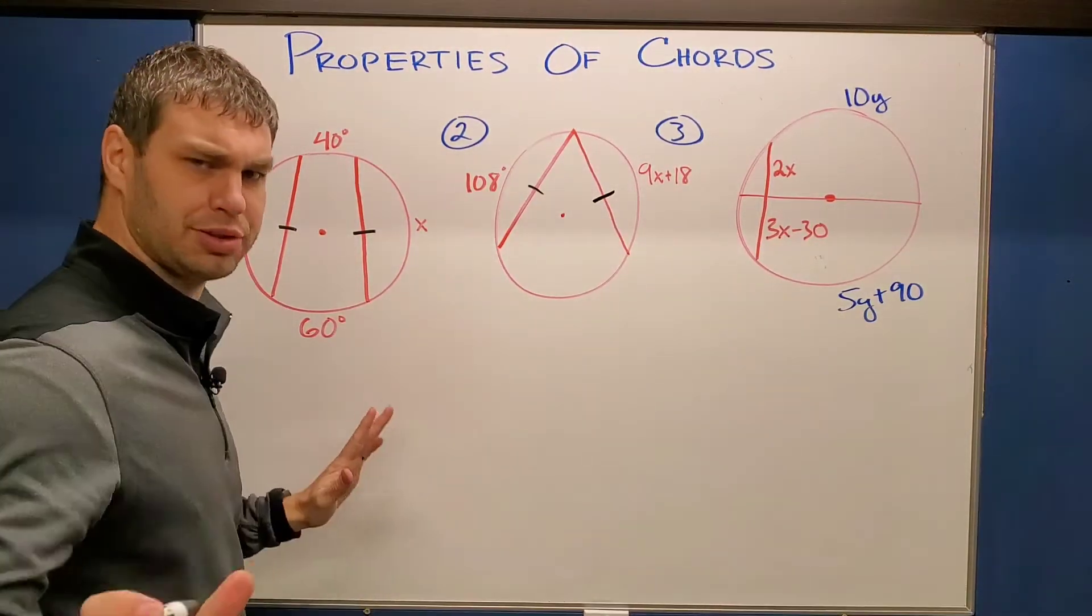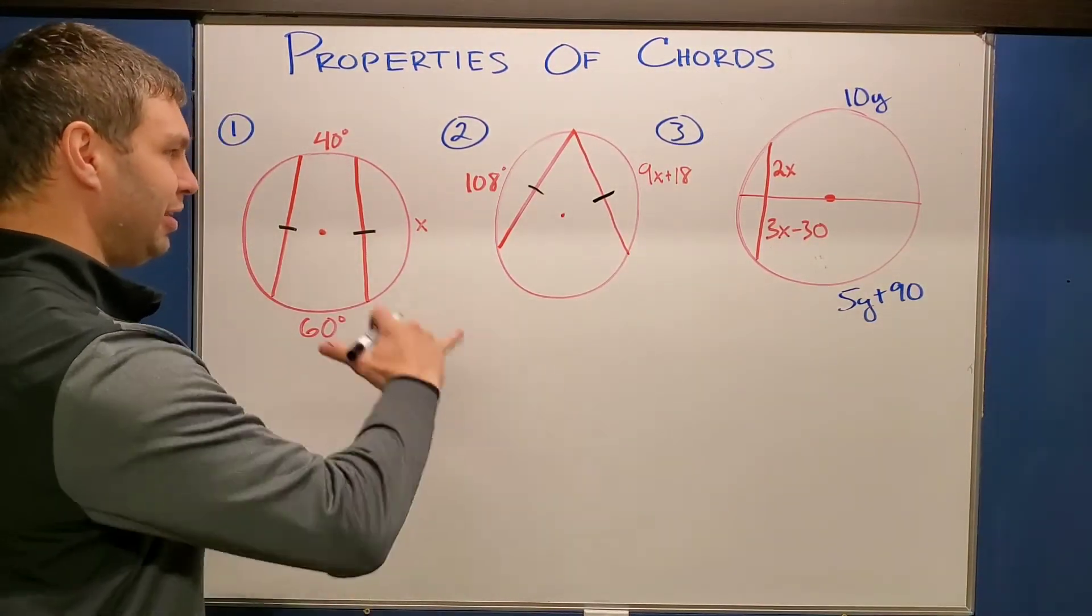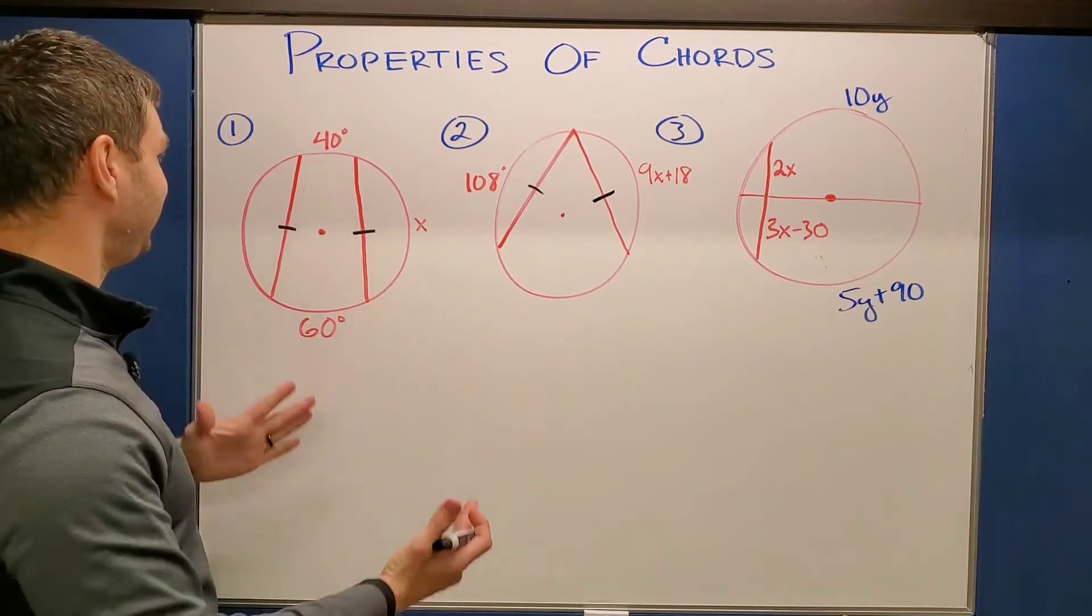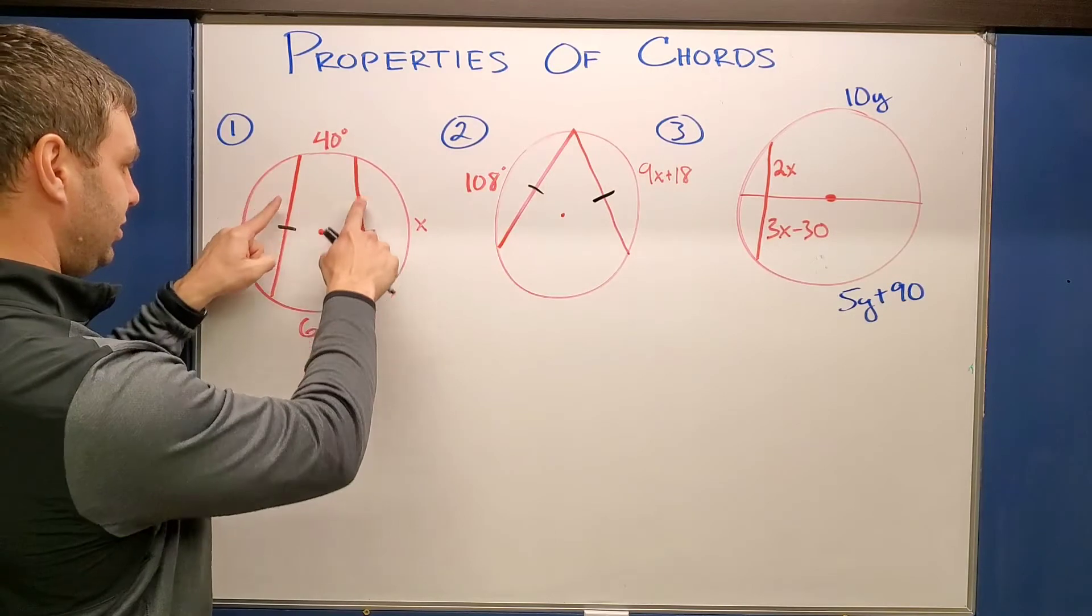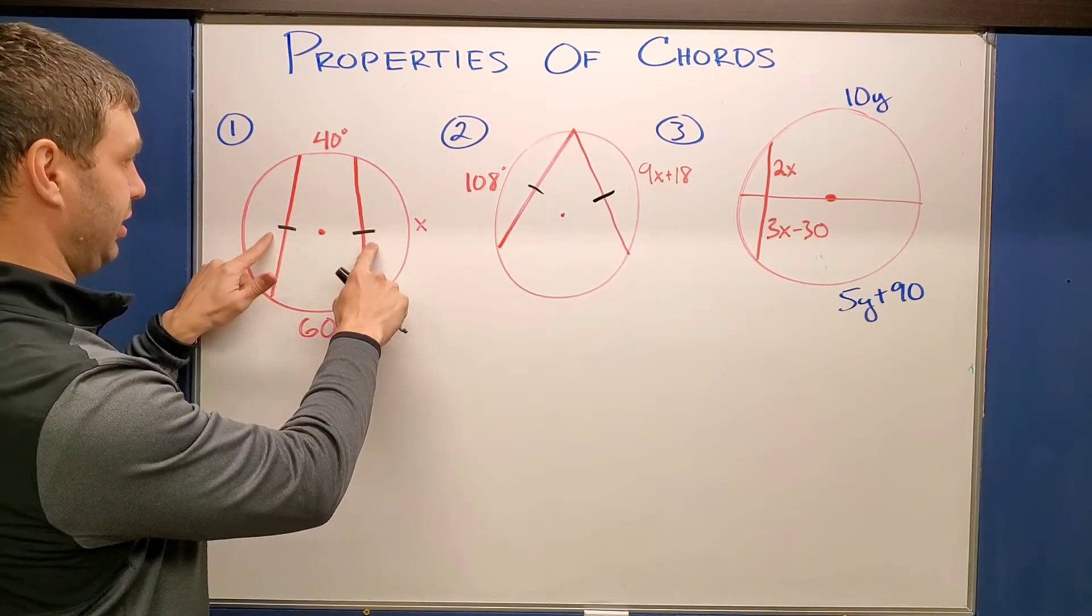So in this first one, and don't make fun of my circles too much here, I'm doing the best I can. They're kind of hard to draw. But it says we have to find X over here, given that these two chords are congruent. We know that because of these two tick marks.